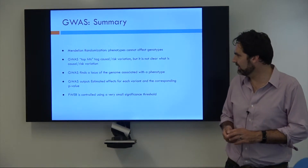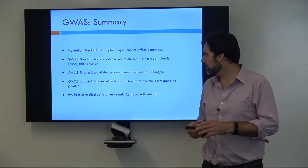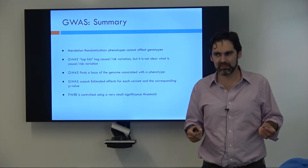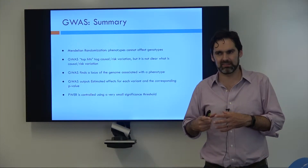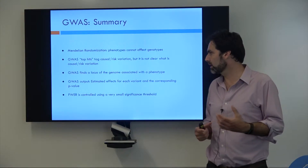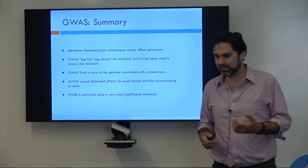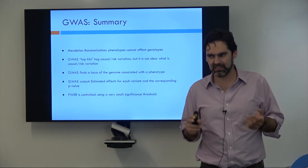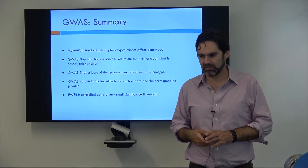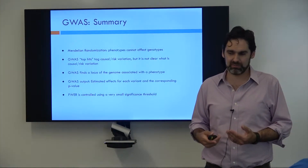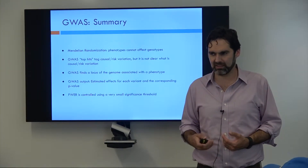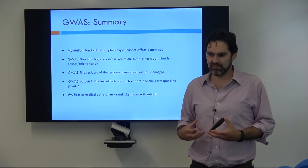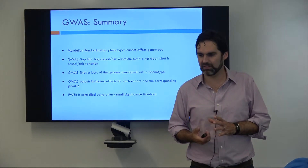In conclusion, we learned about Mendelian randomization, which is the idea that phenotypes can't affect the genotype. So if you see a relationship between genetics and phenotype, you can know that something in the genetics is contributing to whatever the phenotype is. GWAS has these top hits, and these hits — through tagging or LD correlation — point to some actual causal risk variation. But we usually don't know what that causal risk variation is; it's actually very rare that we know.